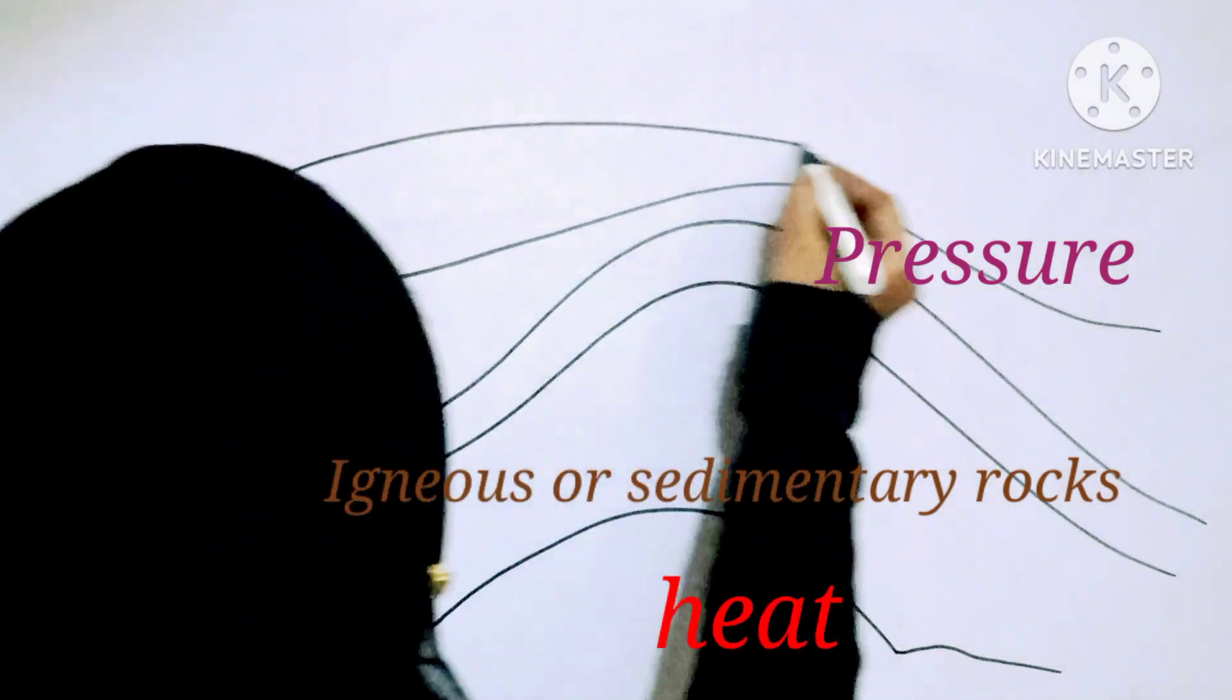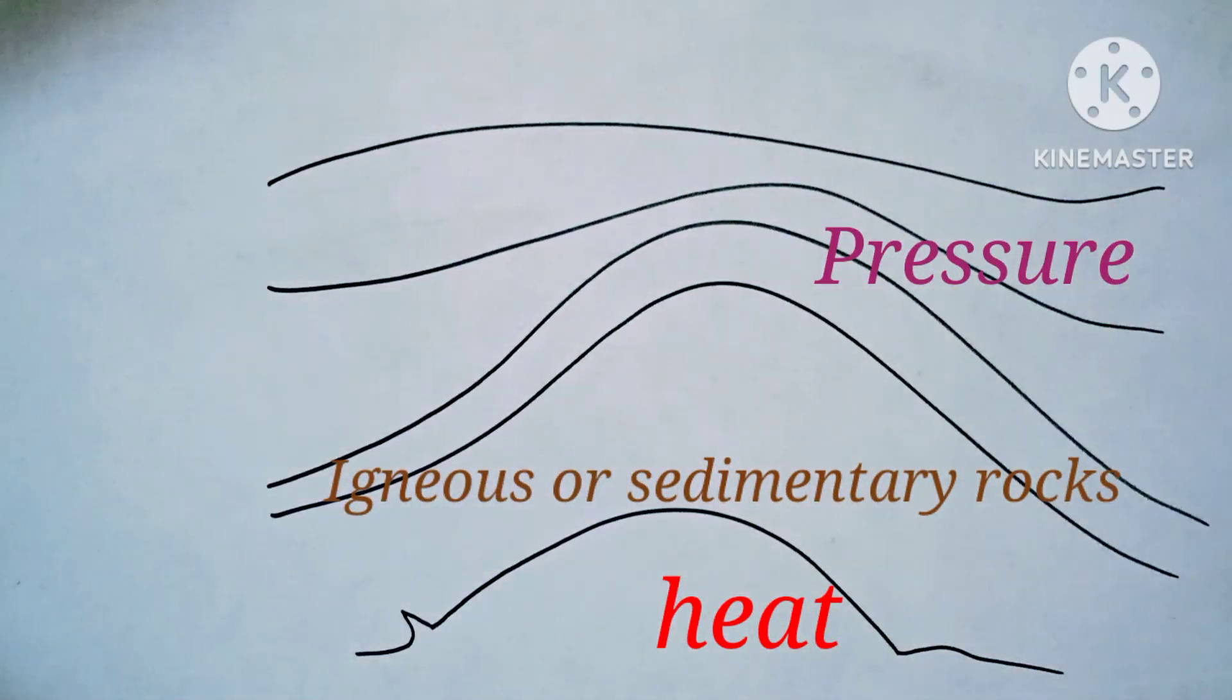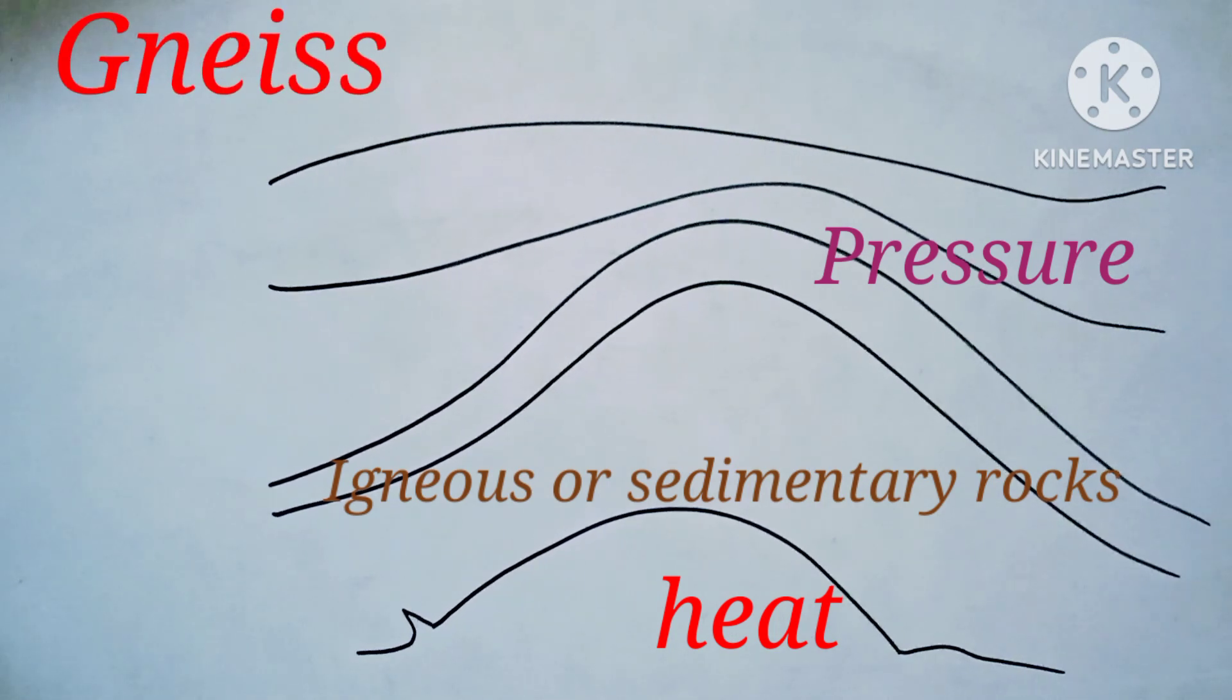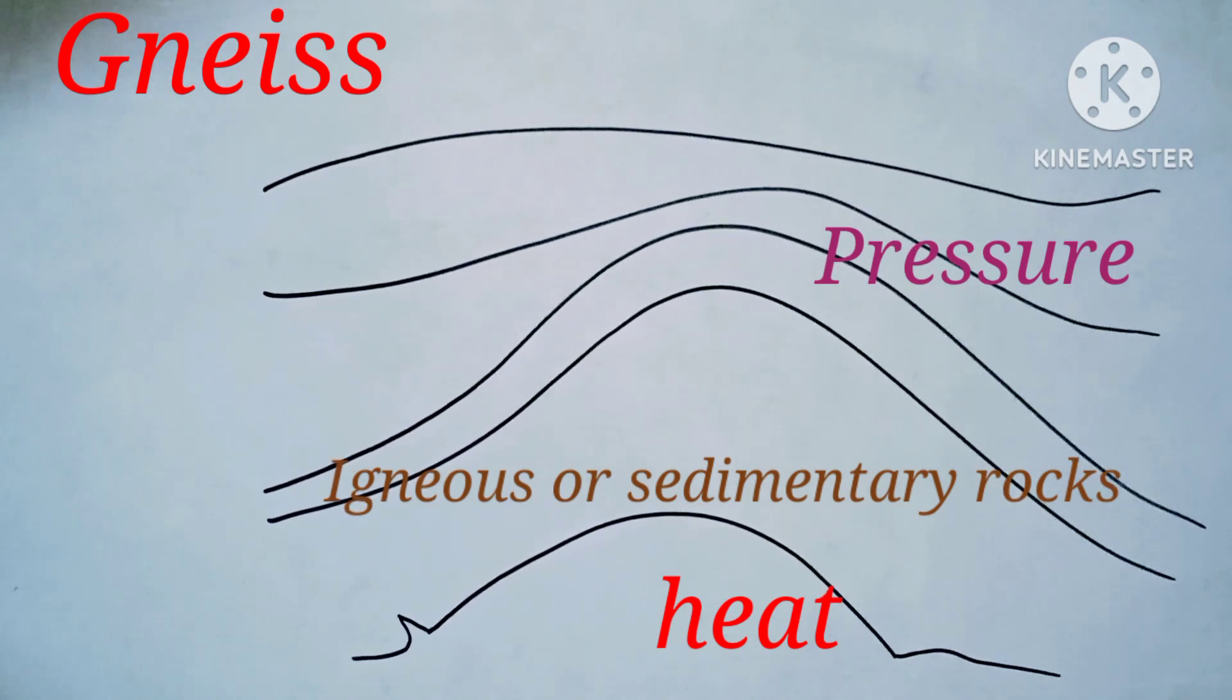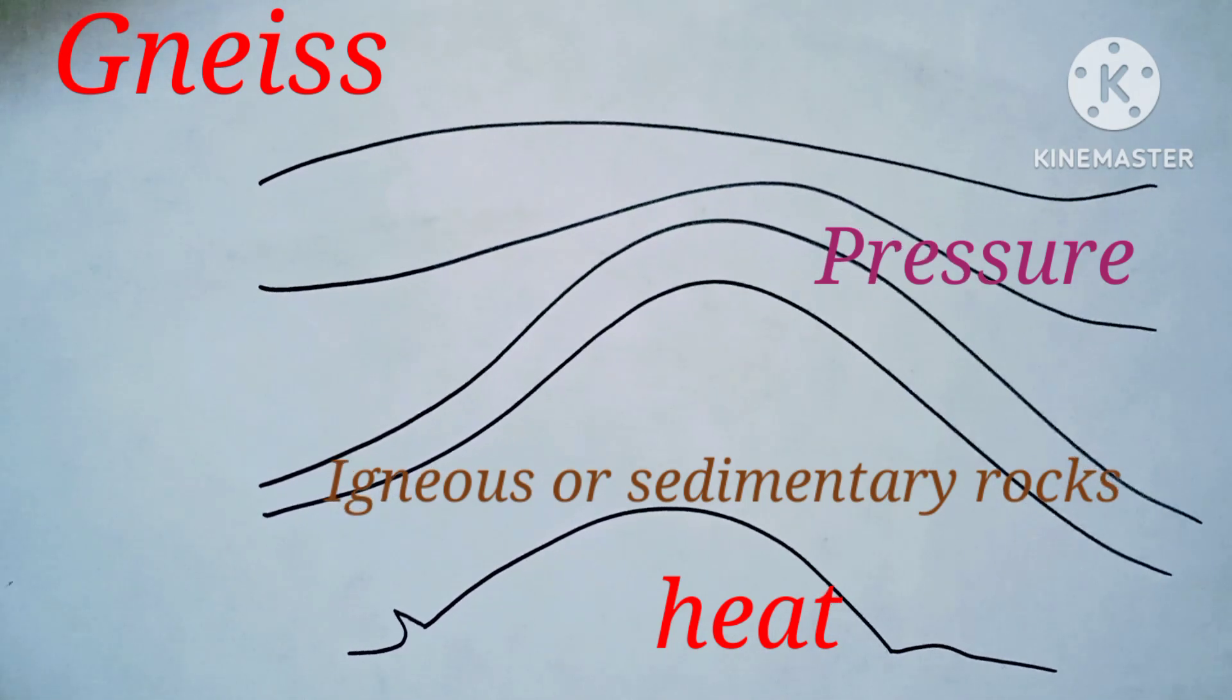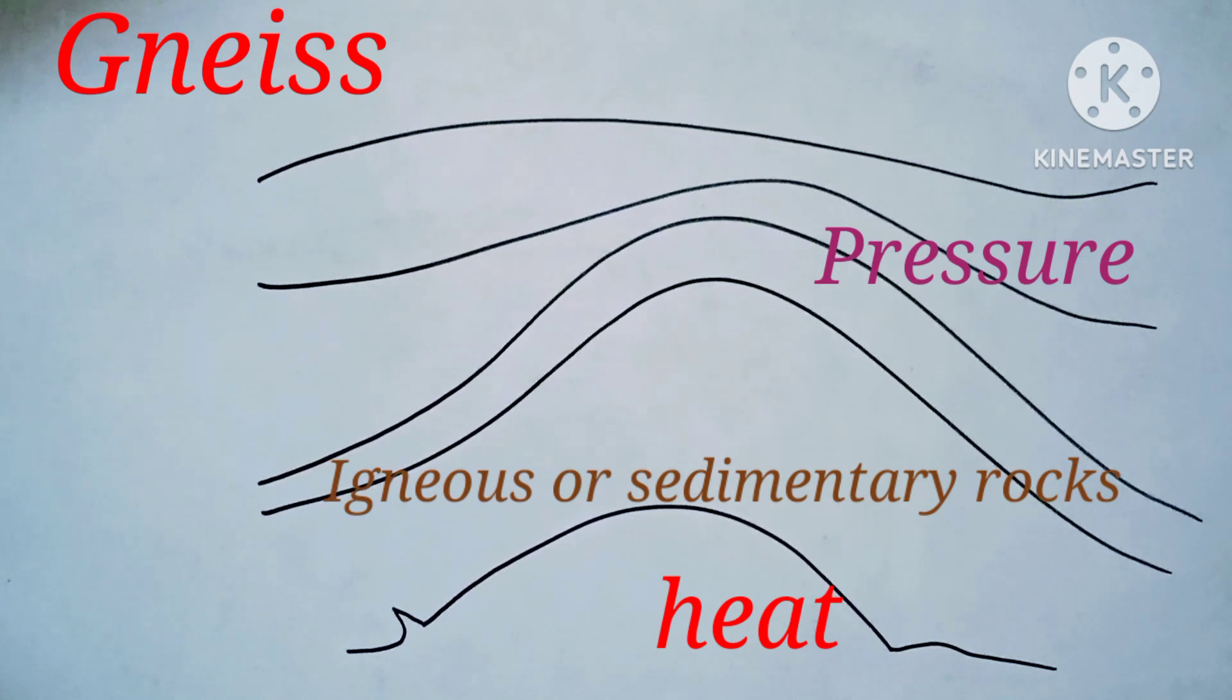Let us see examples of metamorphic rocks. The first example is gneiss. Gneiss is formed from granite. We can see different colored bands in these rocks due to the presence of different minerals, and it is used to make floor tiles and kitchen countertops.